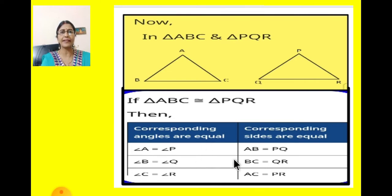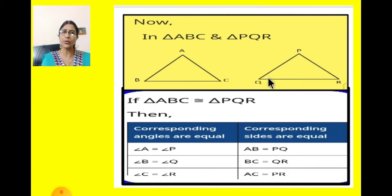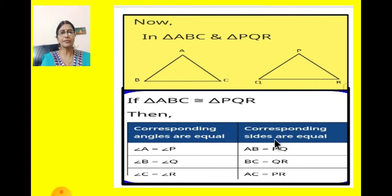In tabular form we can write the corresponding angles. Angle A is equal to angle P, angle B is equal to angle Q, and angle C is equal to angle R. For the corresponding sides: AB is equal to PQ, BC is equal to QR, and AC is equal to PR. This is how we write the corresponding angles, corresponding sides, and the corresponding vertices. And we write triangle ABC is congruent to triangle PQR.